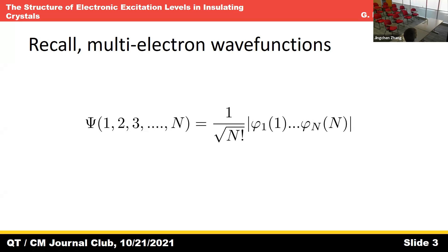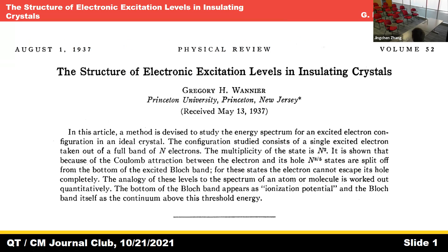Just a brief recall — I'm not sure you're all familiar with this notation for the Slater determinant. For a multi-electron wave function, to get the properly anti-symmetrized multi-product of single electron spin orbitals. We'll come back to that.